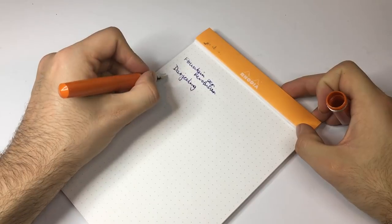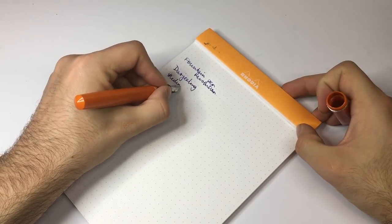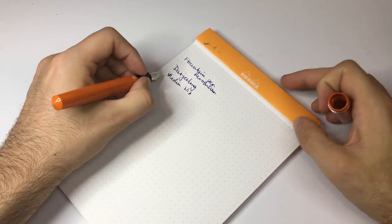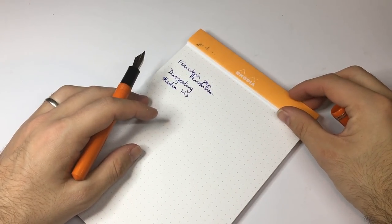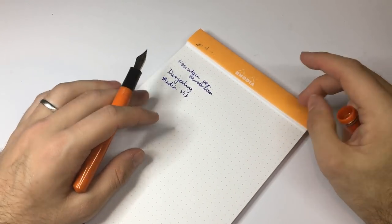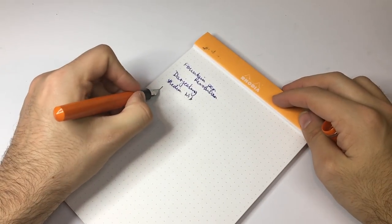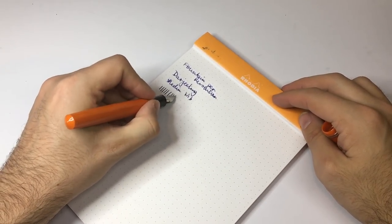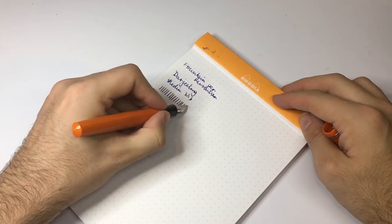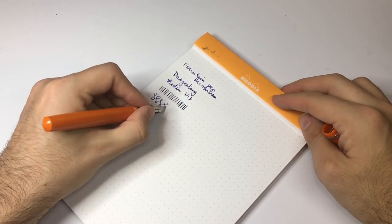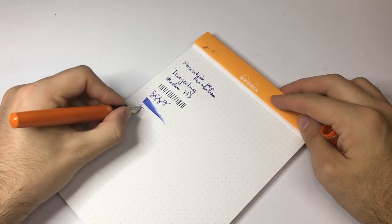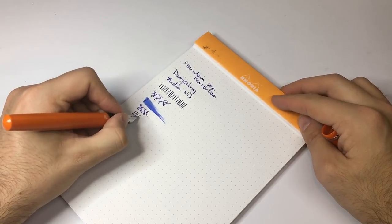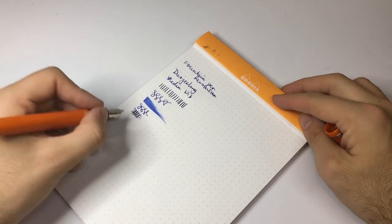So we have Fountain Pen Revolution. I'm not sure that's spelled right, I'm very sorry if it isn't. And this is a medium nib. Now this is the compare, this is like the, if this was a set of experiments this would be the variation free. There's no flex in this nib, it's very smooth, it's quite wet, and it's a very well behaved, very easy nib to write with.